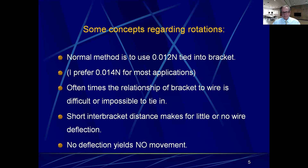Some principles regarding rotations — this is Jeff Taylor talking, not POS, this is my personal preference. You're going to use a round niti tied into the bracket. I prefer a .014 niti for most applications. For the first 20 years of my practice all we had was .016 niti, and it works great — I just prefer .014 for slightly greater flexibility, but its longevity is still great. A .014 niti can last a year or more; a .012 niti only lasts one or two months.